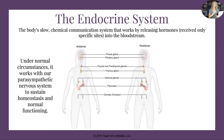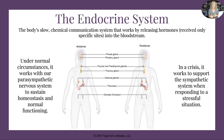Under normal circumstances, the endocrine system works with our parasympathetic nervous system — that's the one that brings us back to rest and digest, back to homeostasis. So the endocrine system works with the parasympathetic nervous system to keep us at homeostasis and normal levels of functioning. But then also in a crisis or stressful situation, the endocrine system works to support the sympathetic nervous system when responding to those crises.